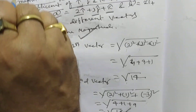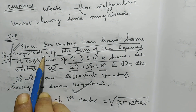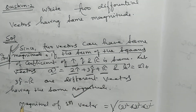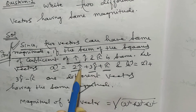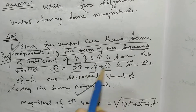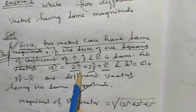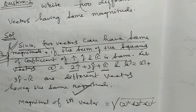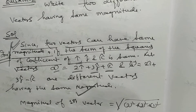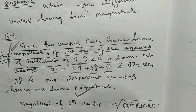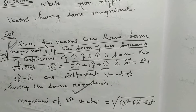You must remember this concept: two vectors will have the same magnitude when the sum of the squares of their coefficients of i-cap, j-cap, and k-cap are equal to each other. In this way, we can find two different vectors with the same magnitude.